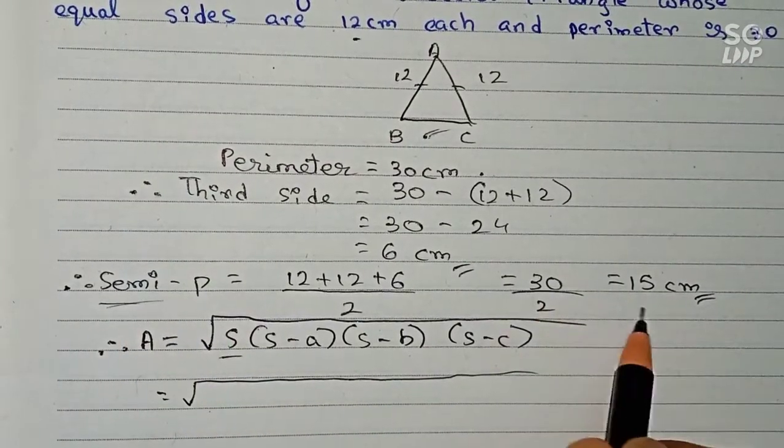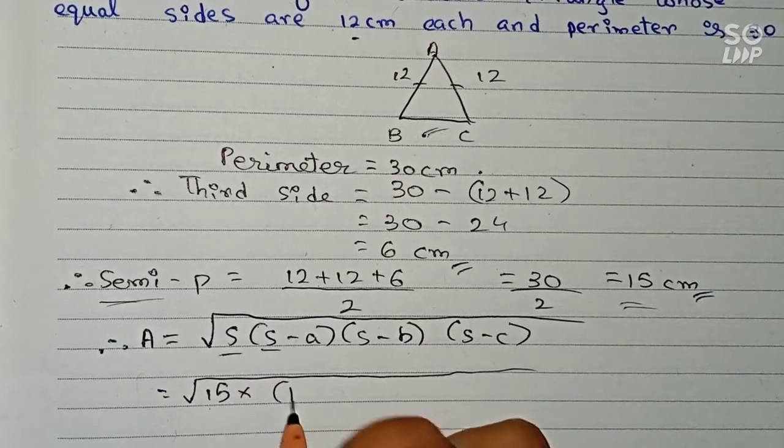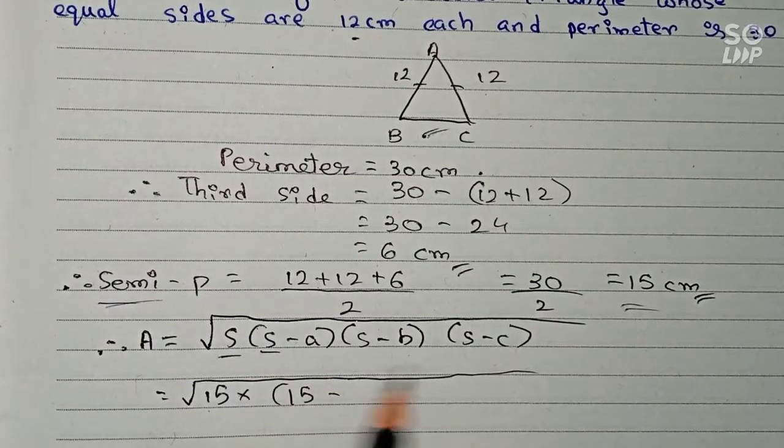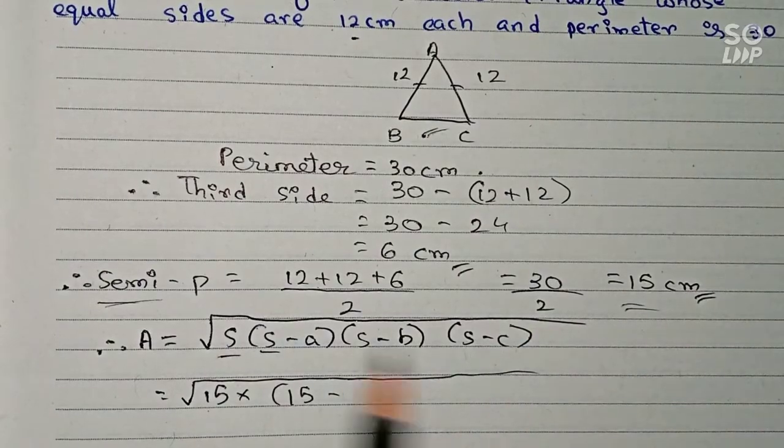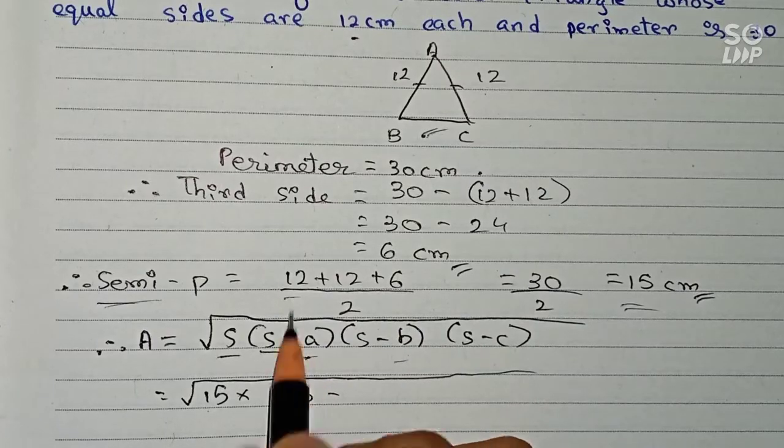So I put down the values here. So here s will be the semi-perimeter, here it is 15, 15 multiplied by 15 minus... So a, b, and c are the three sides of the triangle respectively. So a is... sorry, a is 12.